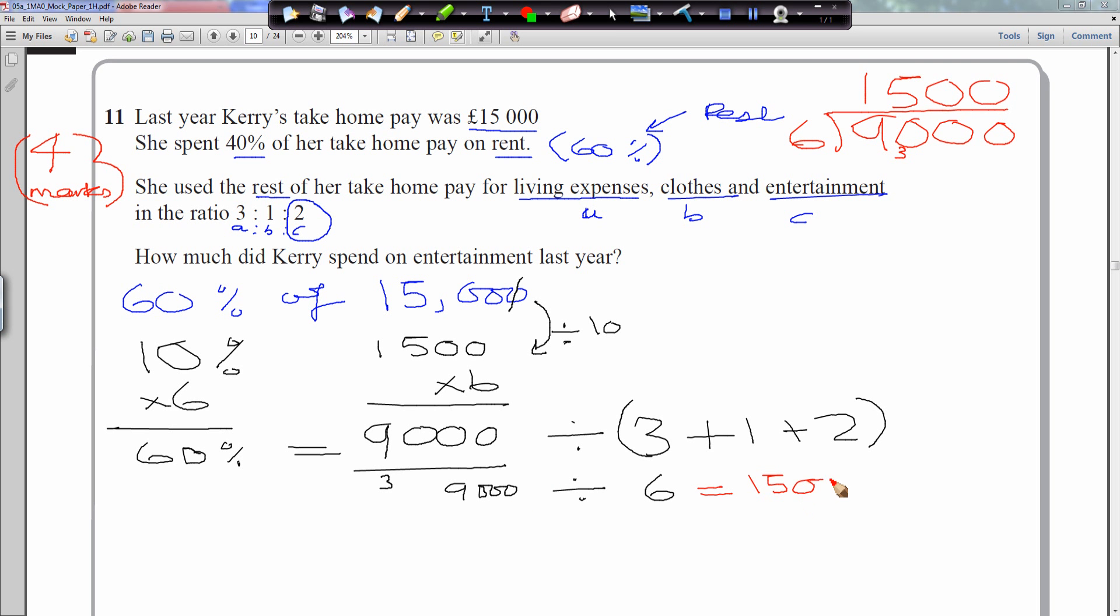So what we've done here, we've divided 9,000 into six parts, because three parts are for living expenses, one part for clothes, and two parts for entertainment. We want to know what two parts is worth, because two parts is what's given for entertainment. So 1,500 times 2, that will be nice and straightforward, gives us 3,000.